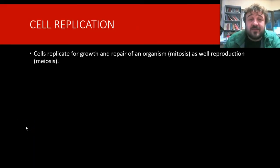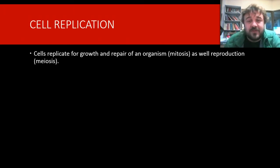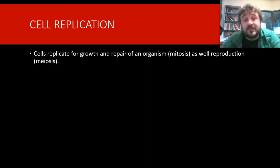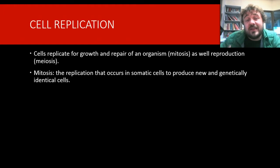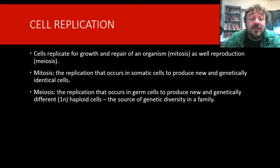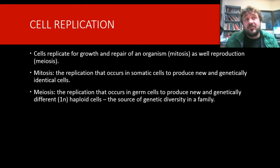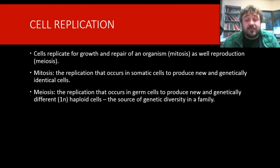Cell replication: cells replicate for two purposes. One is growth and repair — and that's mitosis. The other one is reproduction of a new organism — and that's meiosis. Mitosis occurs in somatic cells and produces new, genetically identical daughter cells. Meiosis occurs in germ cells and produces new, genetically different haploid — 1N — daughter cells. And this is where our genetic diversity comes from.